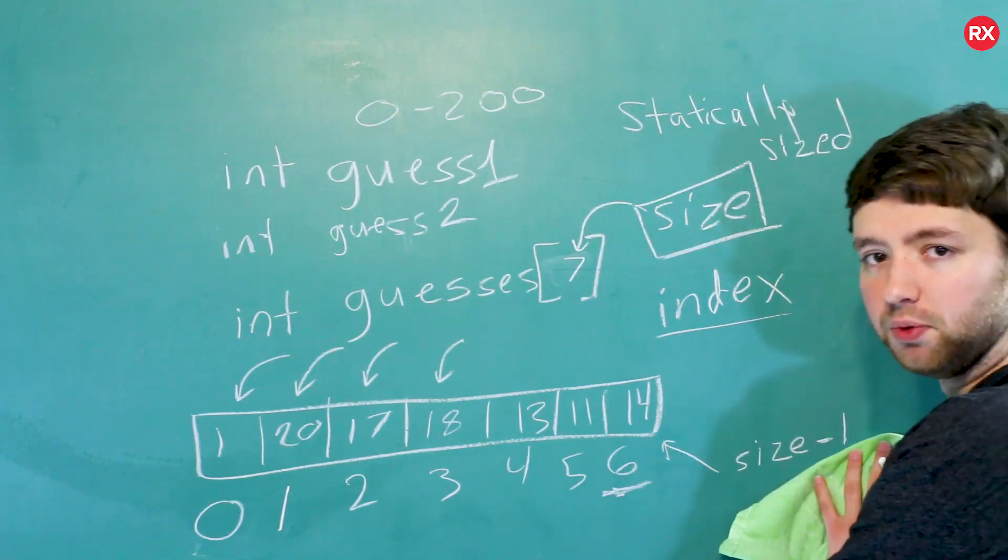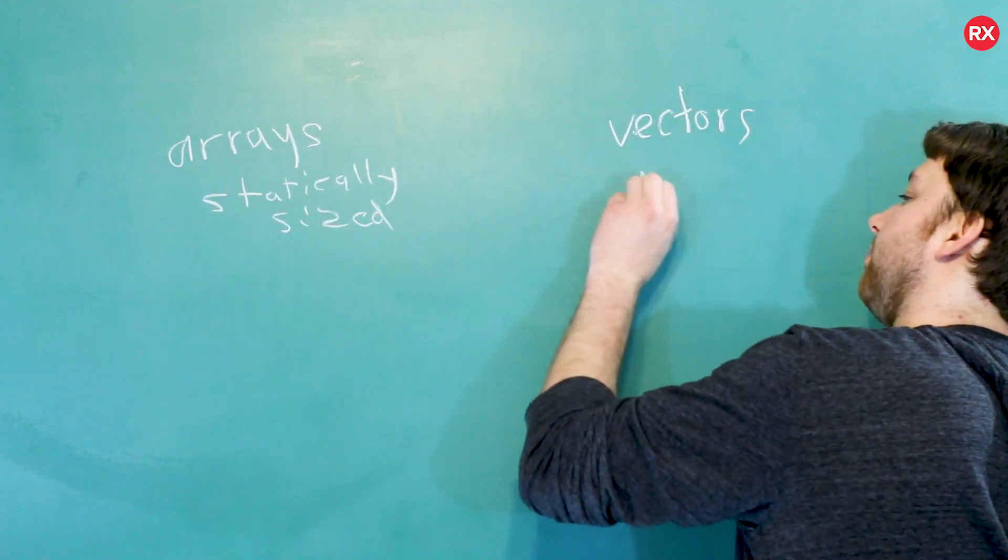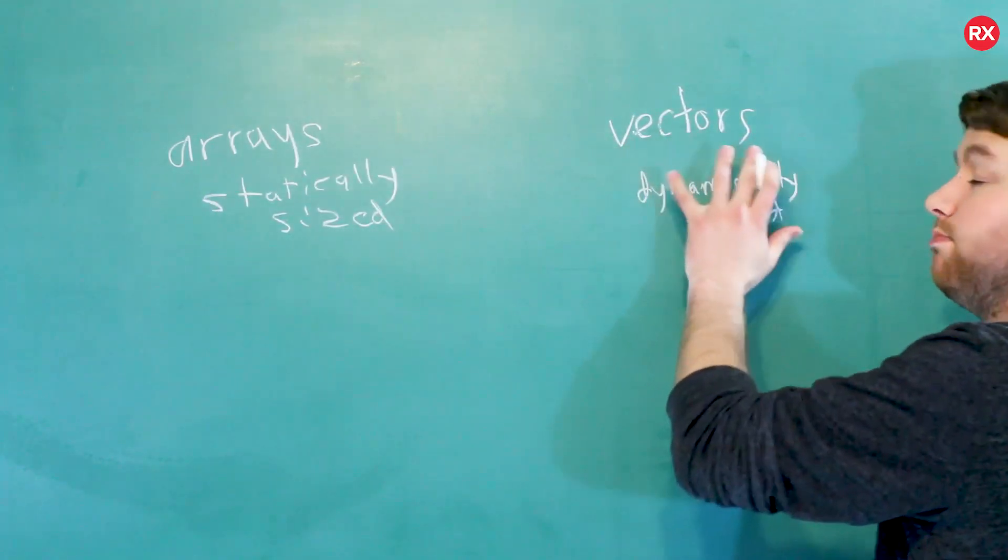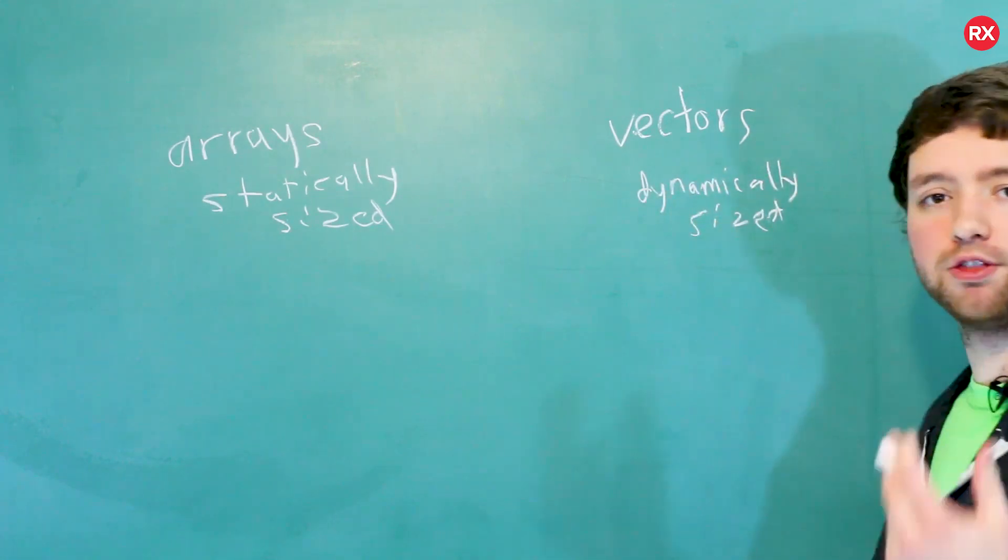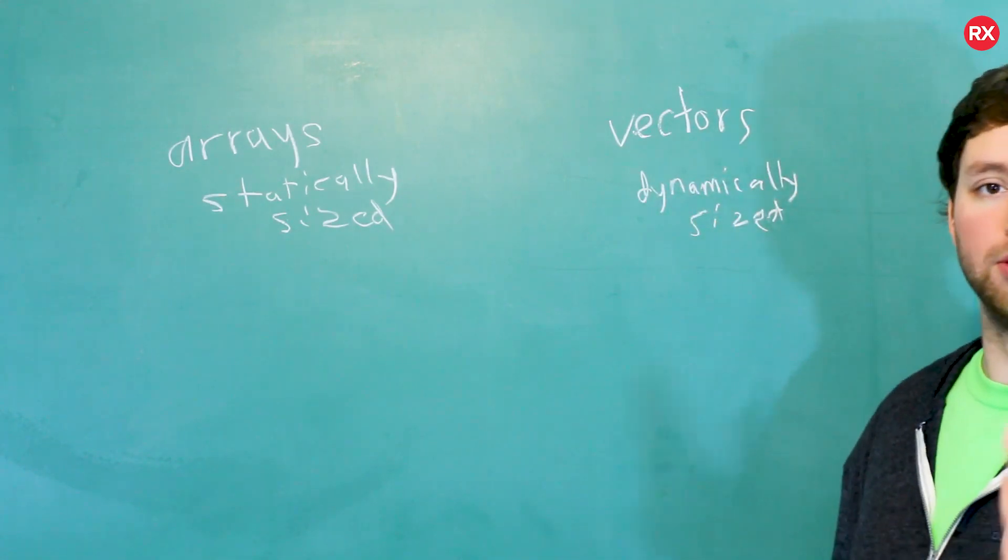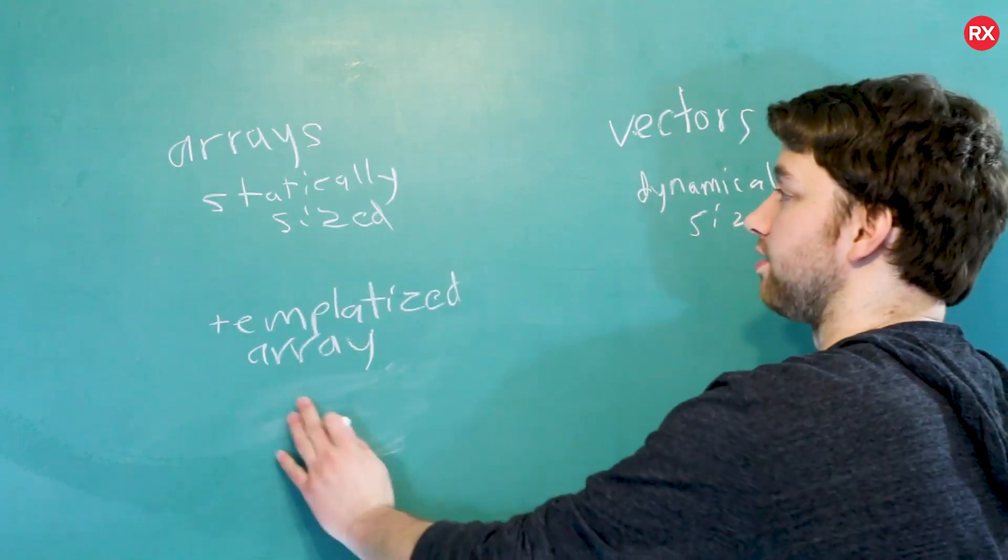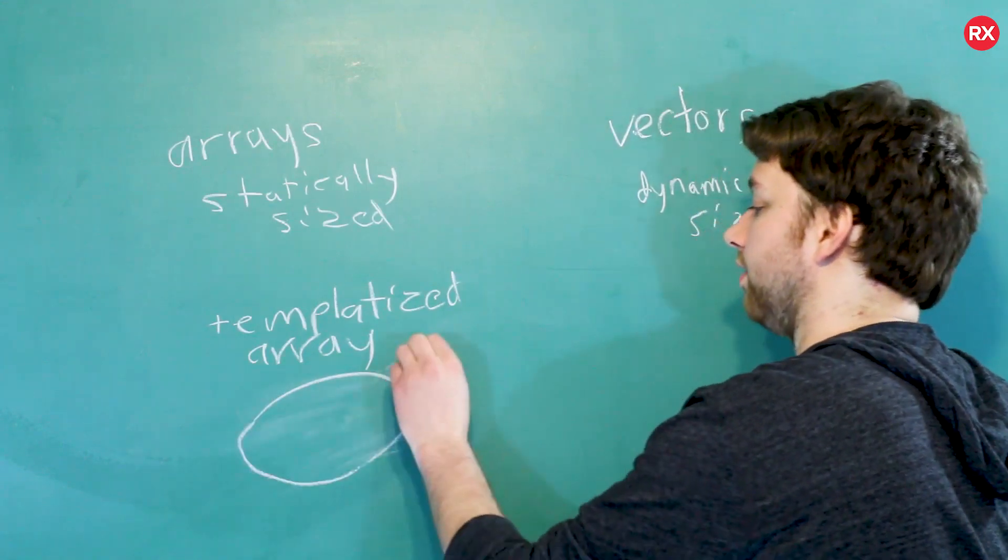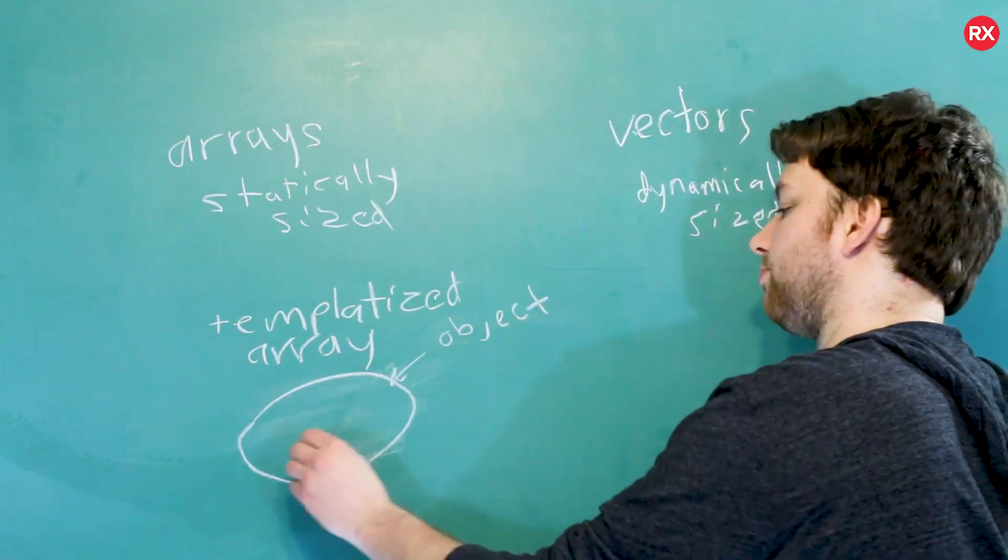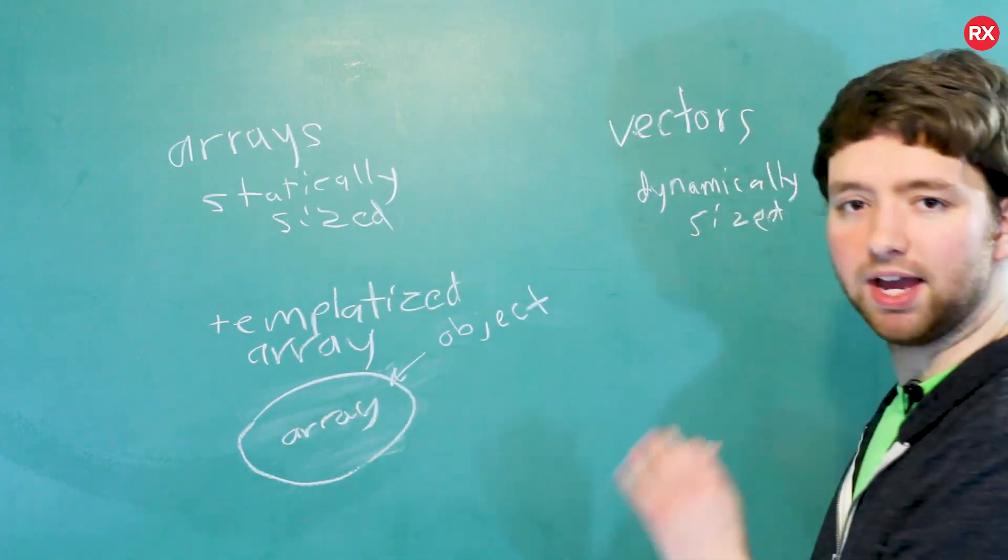So let me clear this off and we'll get an overview. So arrays are statically sized. Vectors are dynamically sized. This is the most friendly to work with. This is what I recommend. There was also that third type, which was templatized arrays, which we're going to be talking about later on. But basically a templatized array is a normal array that's wrapped inside of an object. So we have an object that contains an array. And this just gives us some extra features.